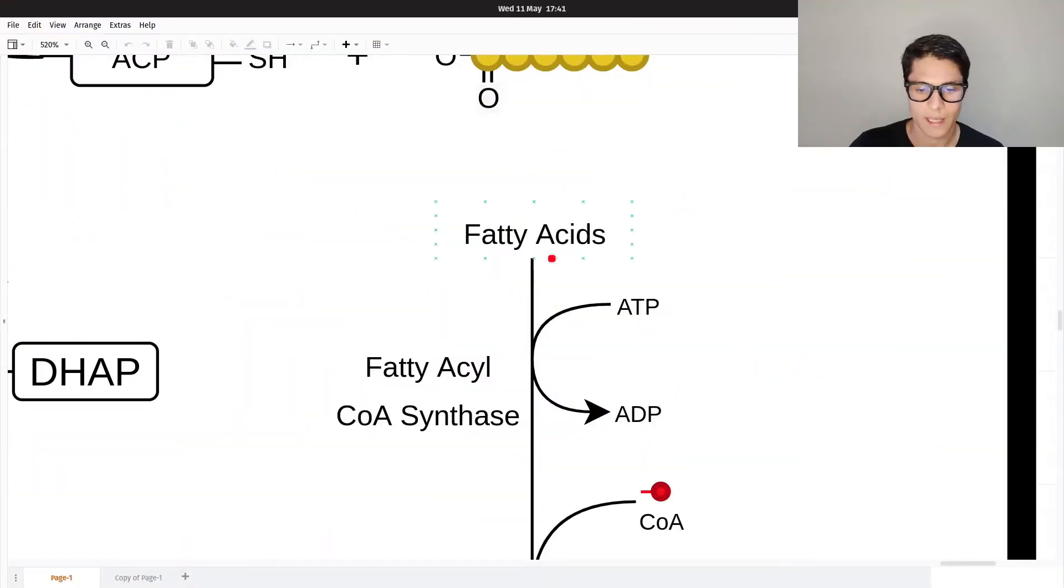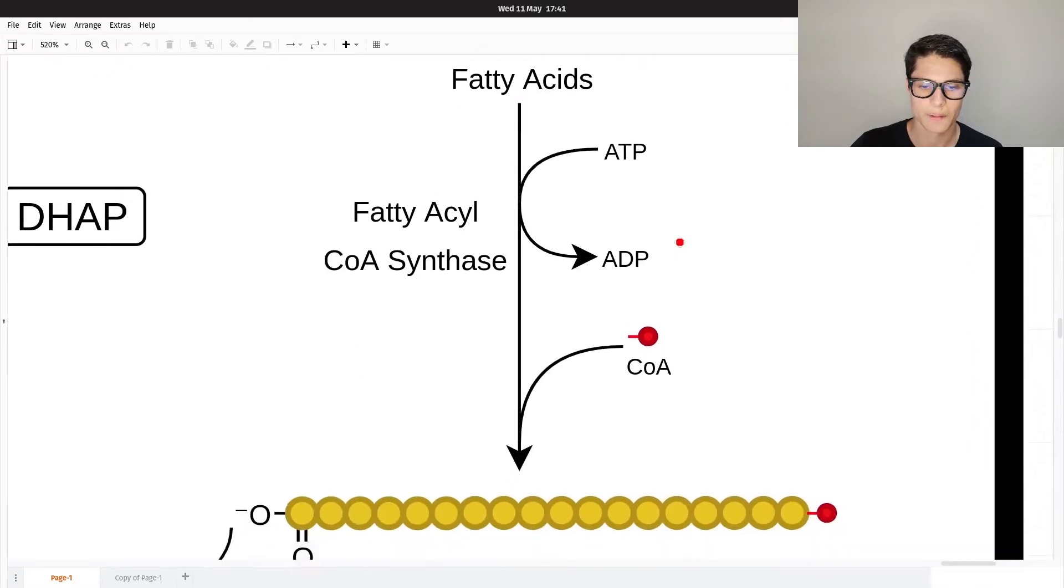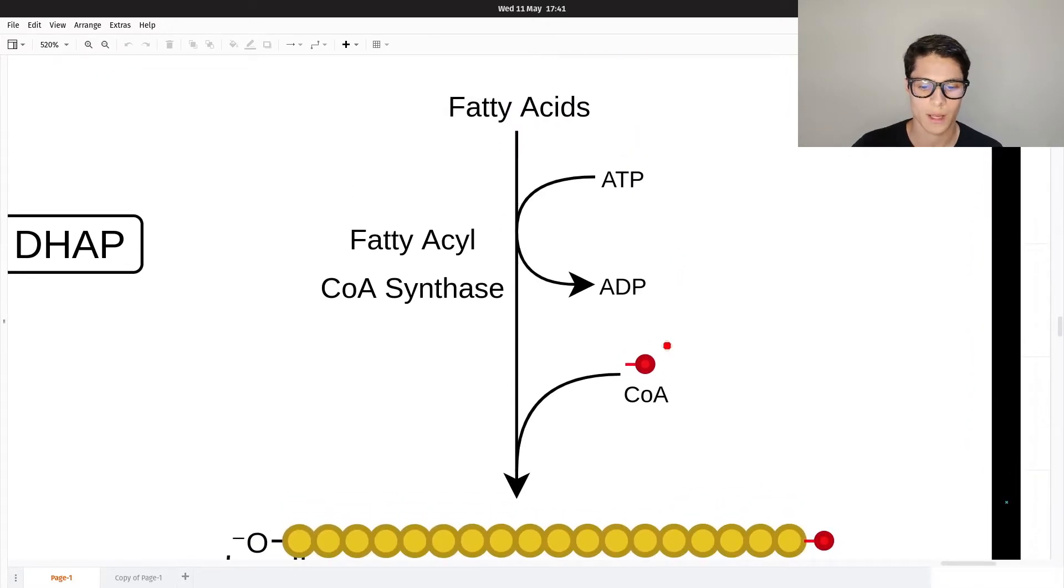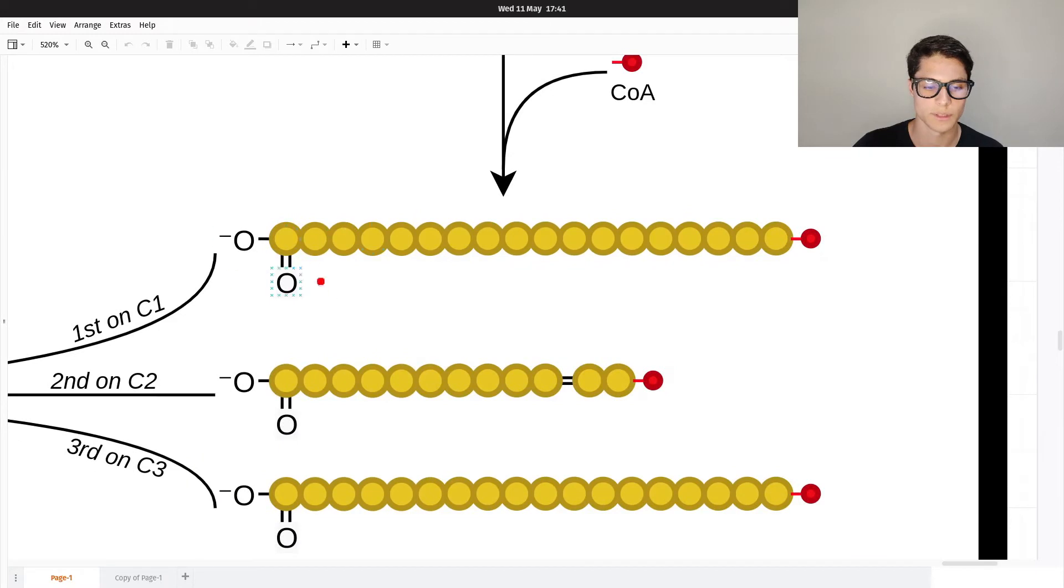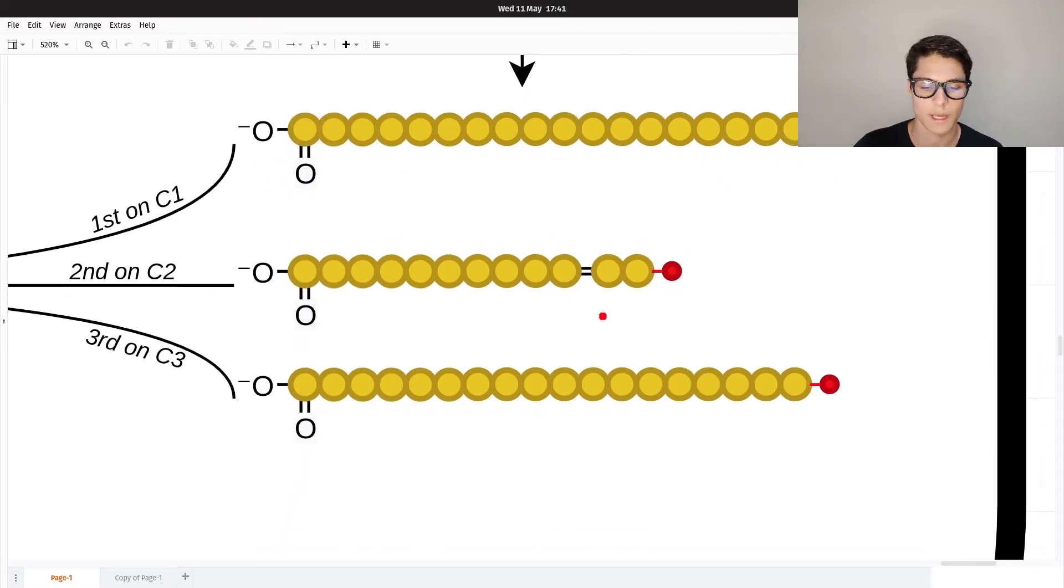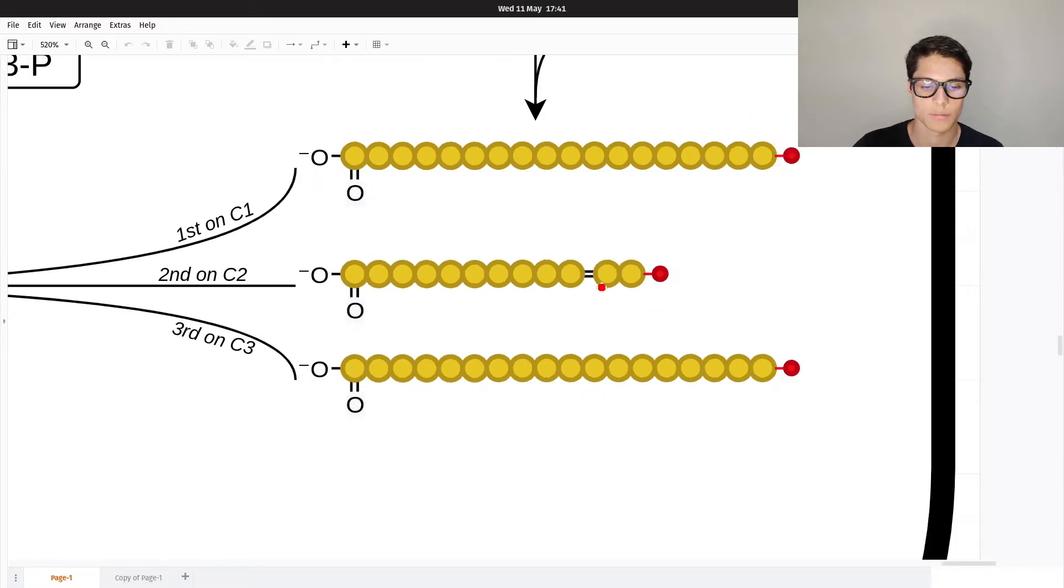Here we are with fatty acids we synthesized from the previous video. Do you remember we need to put a CoA on those fatty acids? We're going to use the fatty acyl-CoA synthase using ATP. Here we are: this is a fatty acid with a CoA, this is another fatty acid, and this is another fatty acid. We got three fatty acids.